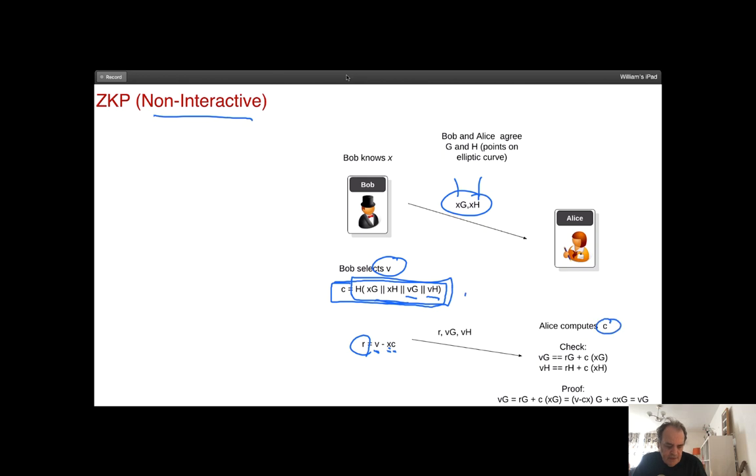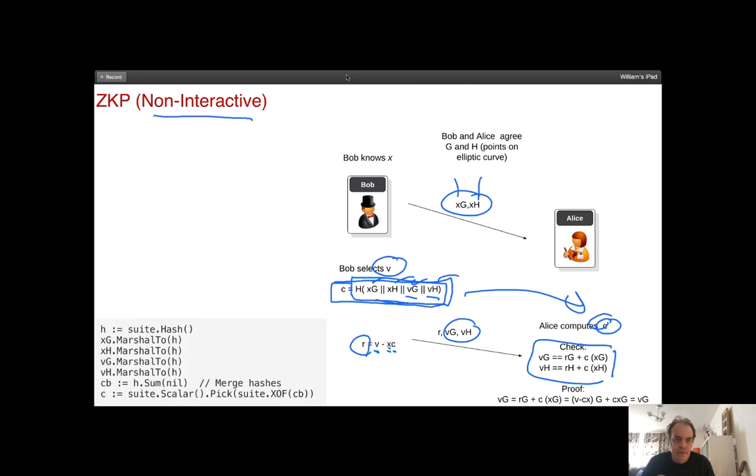Over here, Alice has all these values once they're returned, so she can now compute c and she'll do her check as she did before. This is the code here that we can do this. Basically this is merging the values together into a single hash. I can take multiple values for xg, xh, vg, and hv, and then it will merge them and then it will create a scalar value here for c.